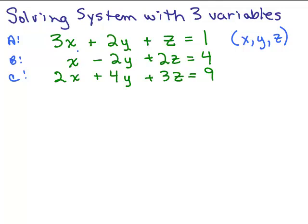When you have three equations and three unknowns, it's often easier to use the addition method. The idea is to work with two equations, eliminate one variable, then work with a different pair of equations and eliminate the same variable. I'm going to work with equations A and B because adding those together will eliminate Y right off the bat.